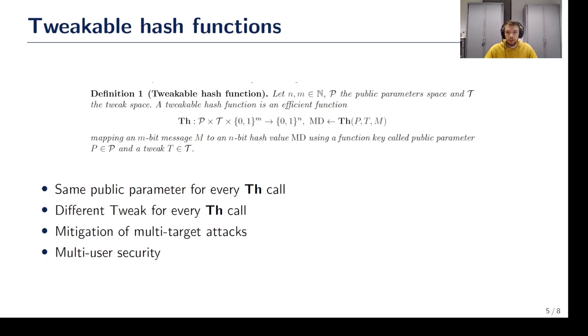The second input – tweak – is different for every hash function call in the scheme. Anyone can determine the tweak that is needed for a particular function evaluation, but the main point is that all of the tweaks are different. This can be viewed as the nonce. This is done to mitigate multi-target attacks.